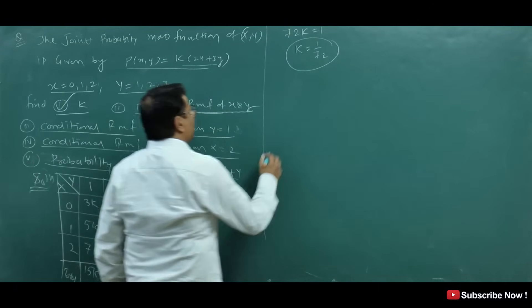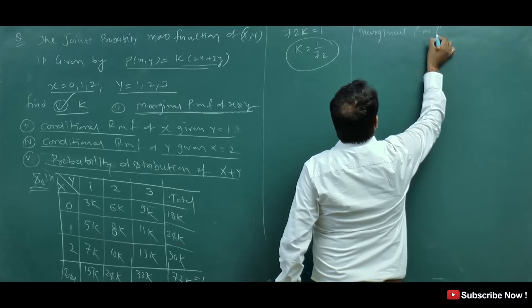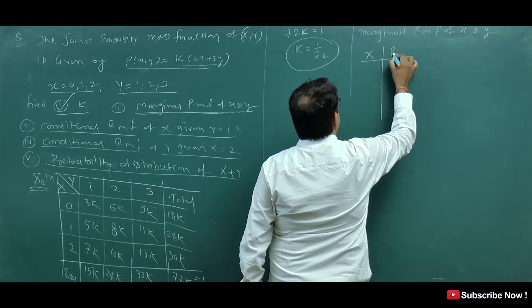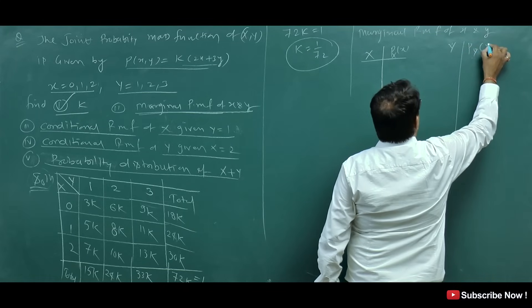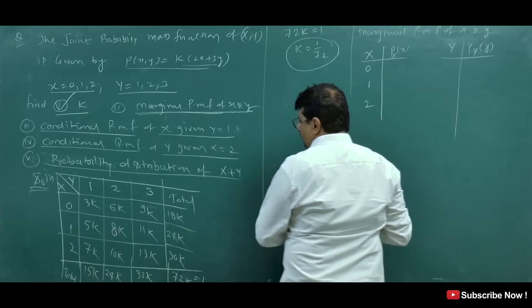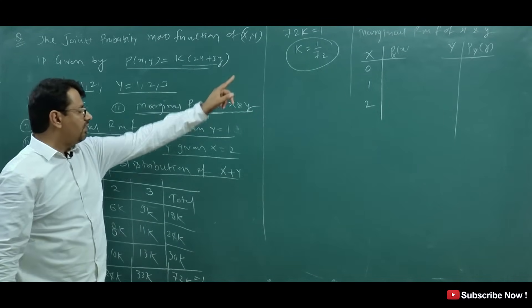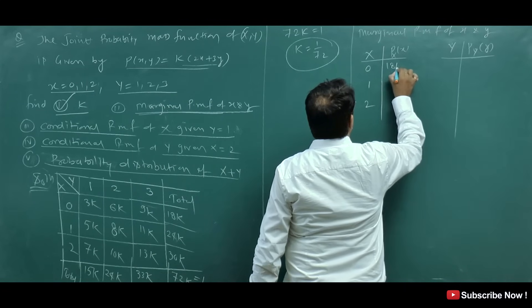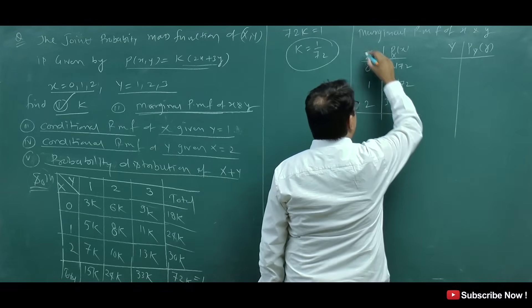Now I am asking for the marginal PMF of X. X values are 0, 1, 2. We write the marginal PMF of X by taking the row totals and multiplying by K equal to 1 by 72. So: P(X=0) = 18 by 72, P(X=1) = 24 by 72, and P(X=2) = 30 by 72. This is the marginal PMF of X.